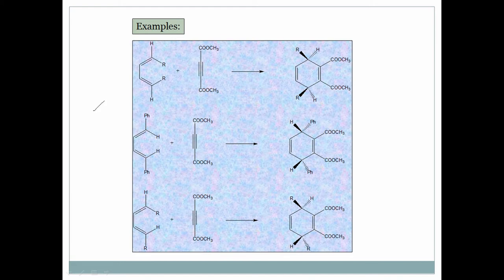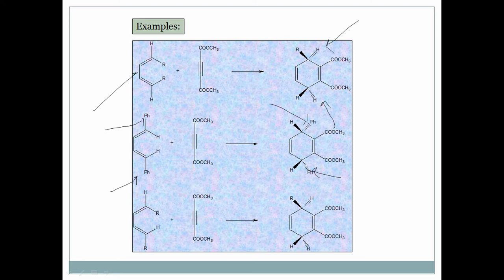In example one, hydrogens are outsider groups, so after the Diels-Alder reaction these outsider hydrogens are below the plane, while R groups classified as inside groups are above the plane in the adduct. In example two, phenyl groups are outsider groups, so Ph comes below the plane, and hydrogens being inner groups come above the plane. In example three, R groups are below the plane as outsider groups and hydrogens are above the plane as inner groups.